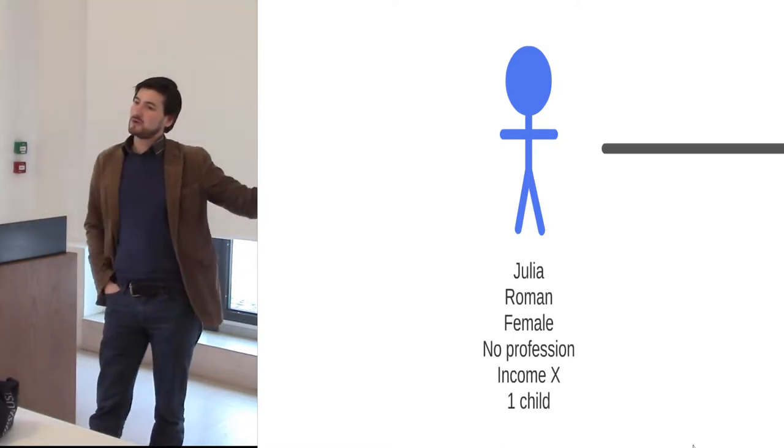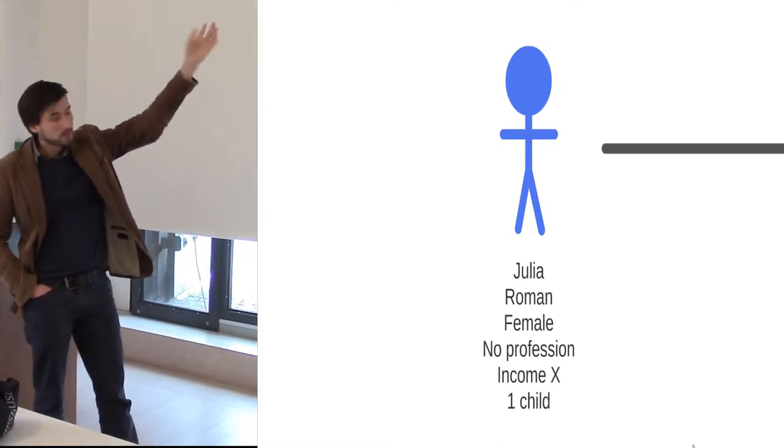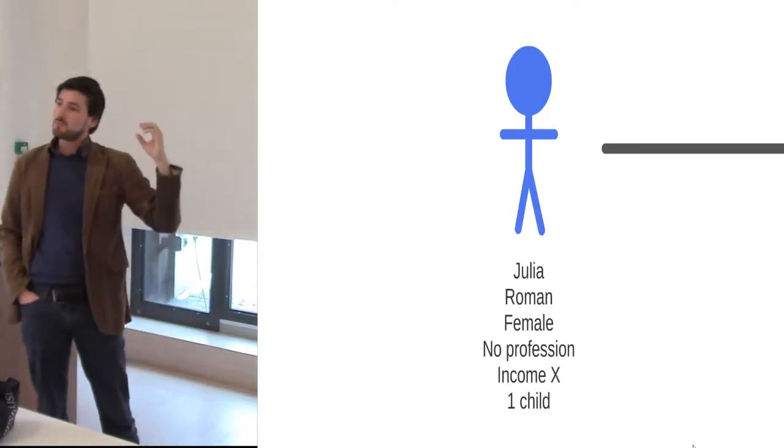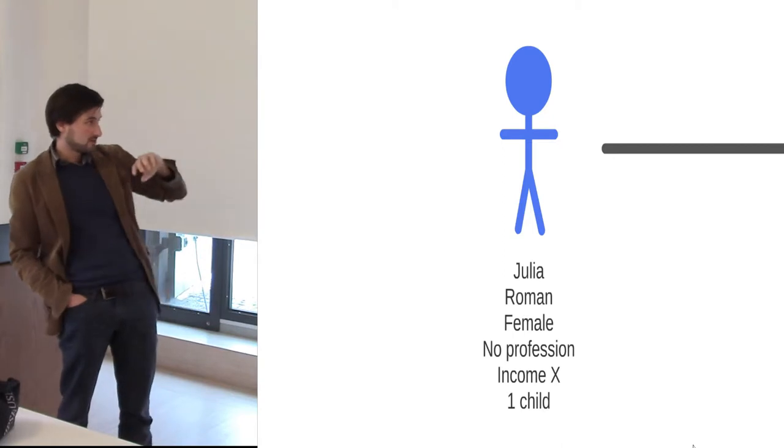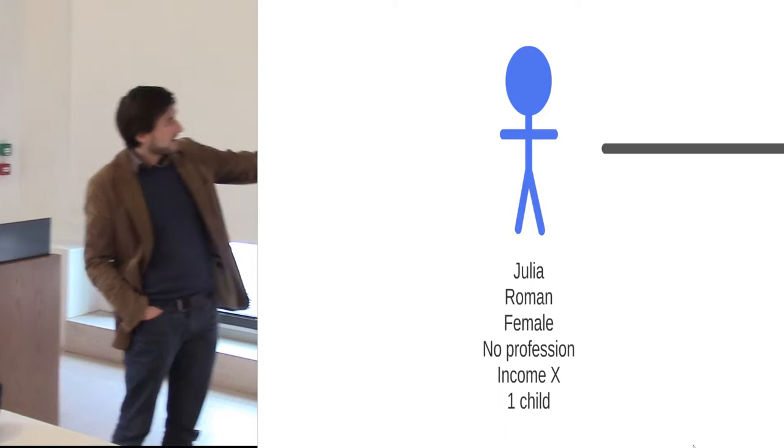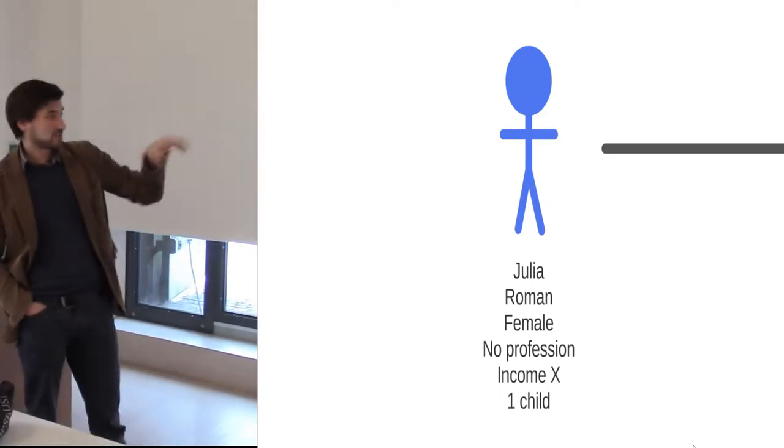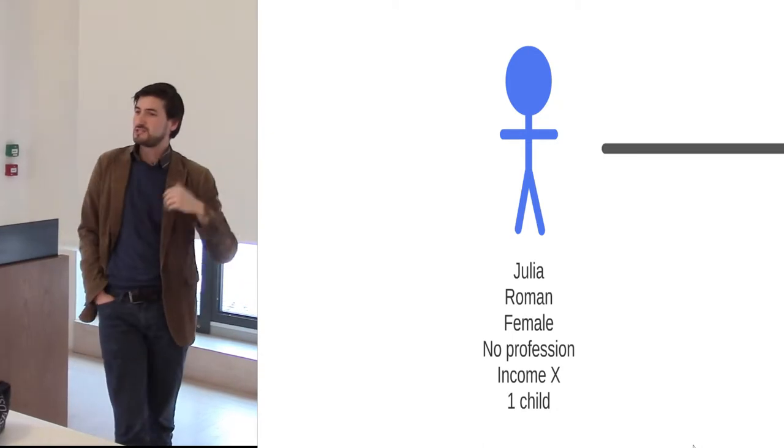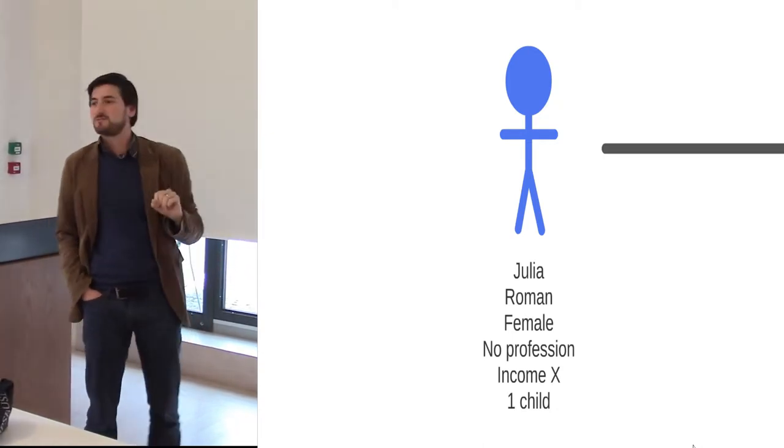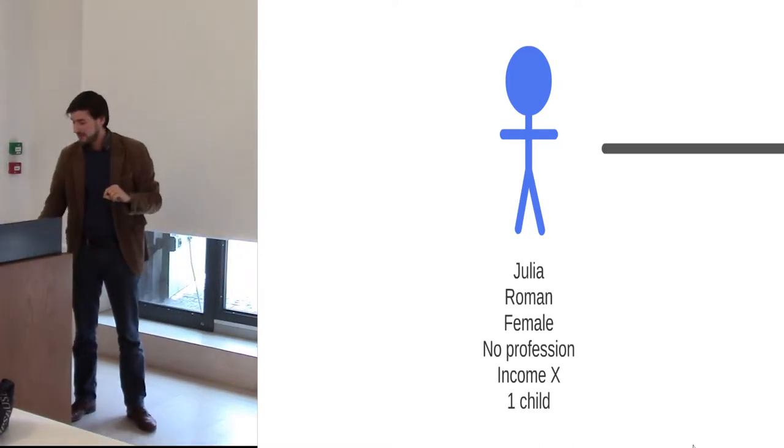Now there's one type of relationship that we already can see here in this attribute information when we're only considering one entity and that is the dependency of one piece of information on another, the dependency of one attribute on another. So the fact that Julia doesn't have a profession or the fact that she has a certain income is dependent on her profession so the income will be low. So there's a dependency here between two pieces of attribute information. That's one way in which relationships can matter.